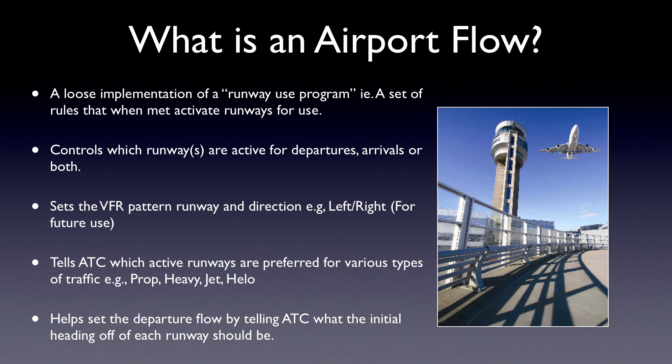So maybe one runway is preferred only for propeller traffic, single-engine props. Another runway, maybe they try to keep the bigger guys, just the heavies and the jets, on that runway. So with flows, you can determine which types of aircraft use which types of runways.